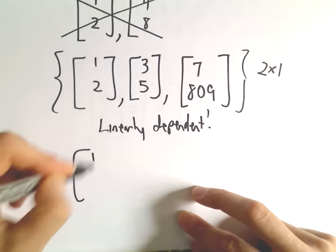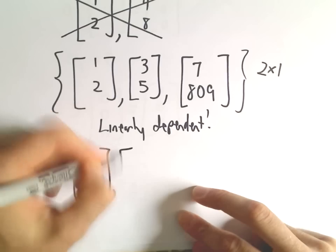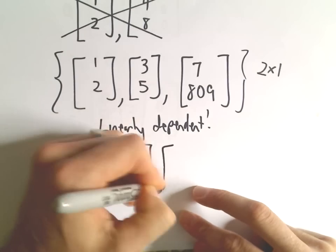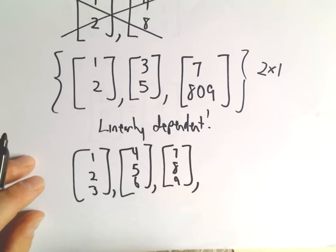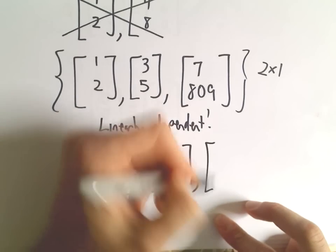Same idea if you had [1, 2, 3], [4, 5, 6], [7, 8, 9]—these are 3×1 vectors. If we throw in any extra vector,